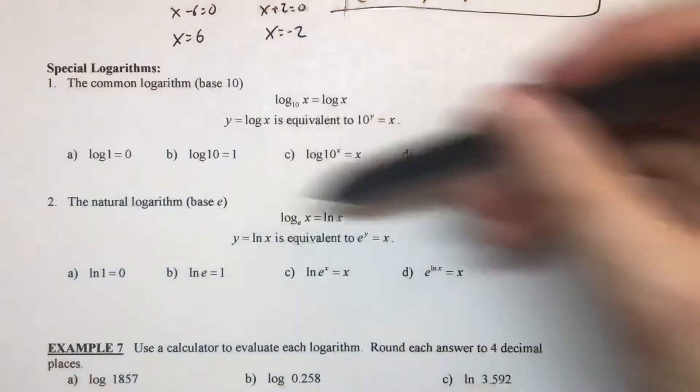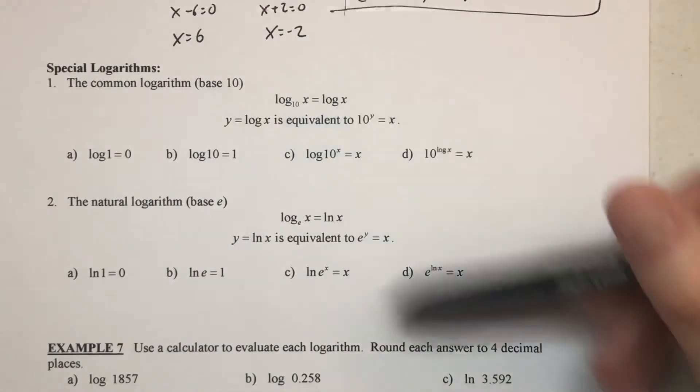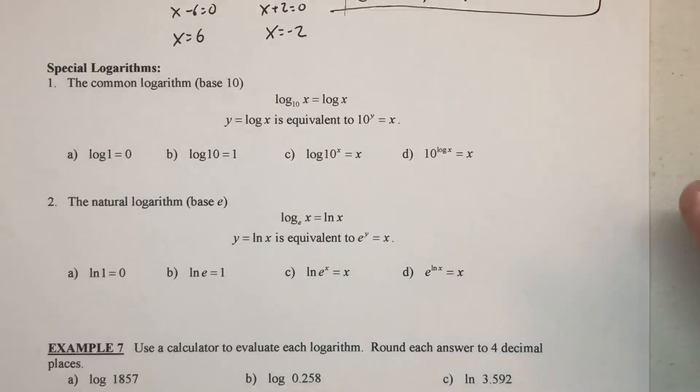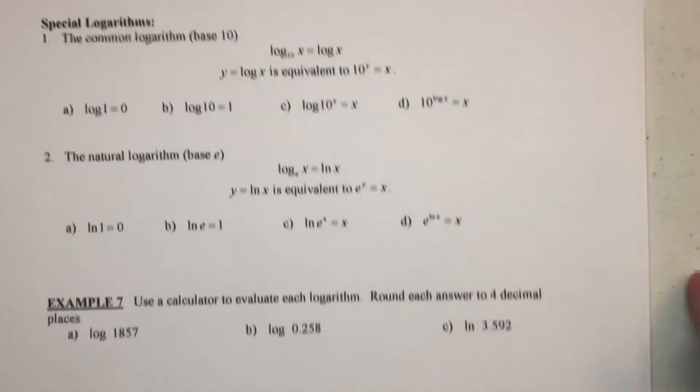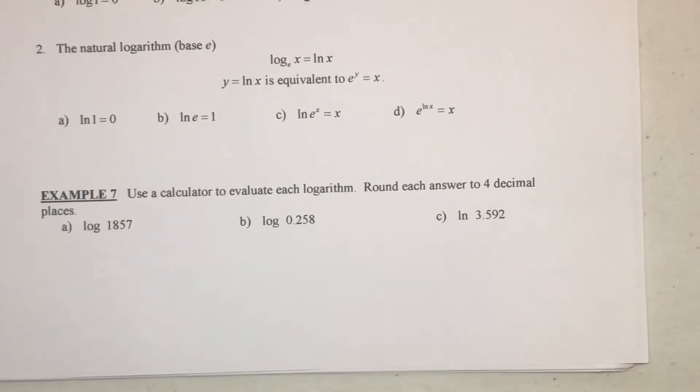So again, all four properties from the previous page just specifically written out for the common log base 10 and the natural log base e. And then the very last thing here in the section is calculating or estimating logarithms, nothing more than making sure you've got a calculator and typing this into your calculator.